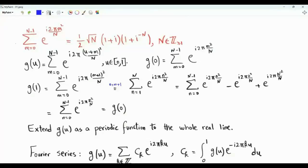Bismillah ar-Rahman ar-Rahim. We want to prove that the sum e to the i pi m squared over n, where m is from 0 to n minus 1, is equal to one half square root of n times 1 plus i times 1 plus i to the minus n, where n is a positive integer.